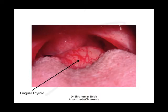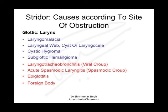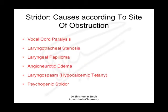At the glottic level, congenital causes include laryngomalacia, laryngeal web, cyst or laryngocele, cystic hygroma, and subglottic hemangioma. Acquired or infective causes include laryngotracheobronchitis or croup, acute spasmodic laryngitis, epiglottitis, foreign body, vocal cord paralysis, laryngotracheal stenosis, laryngeal papilloma, angioneurotic oedema, laryngospasm especially related to hypocalcemic tetany, and psychogenic stridor.